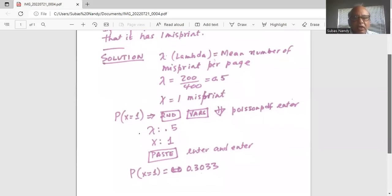And the probability of x equal to 1 is 0.3033.